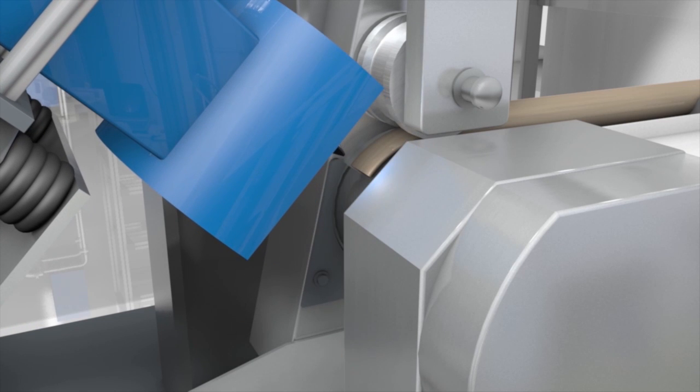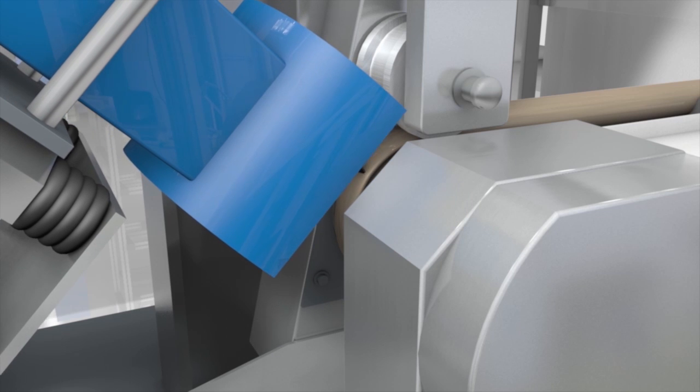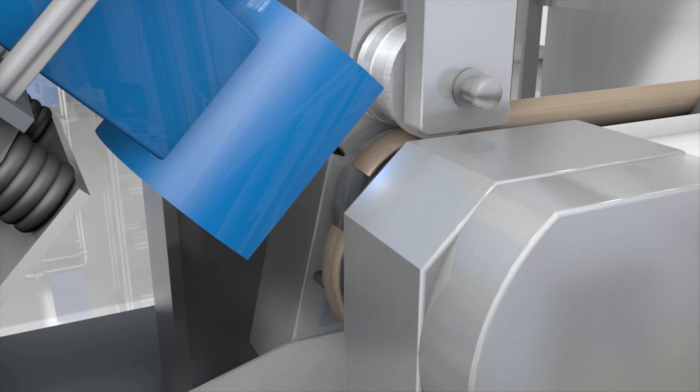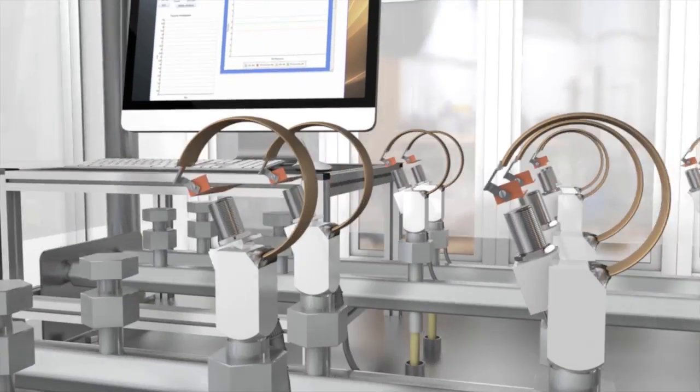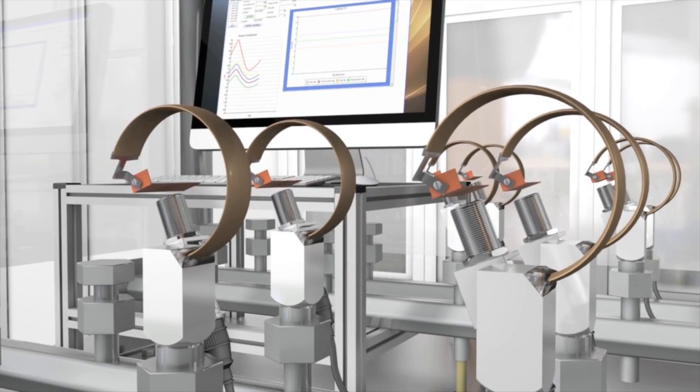The production of a Bourdon tube starts at the bending machine, where metal tubes get their characteristic C-shape and are cut to a specific length. In parallel, long-term stability tests are conducted in a laboratory to ensure maximum reliability and safety.